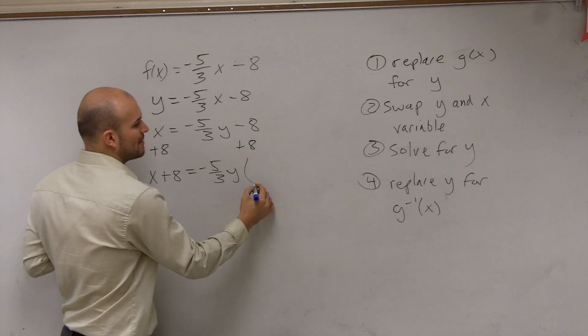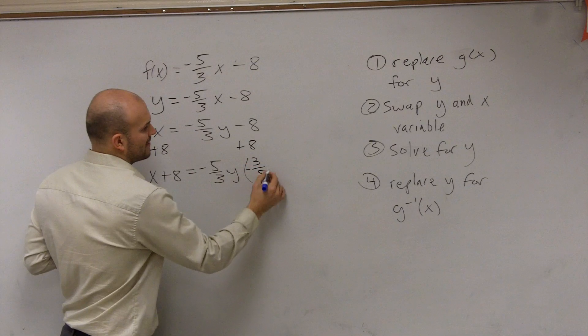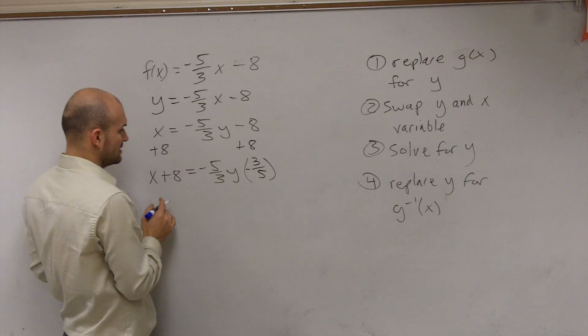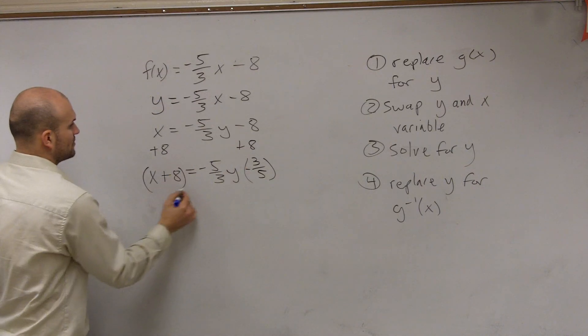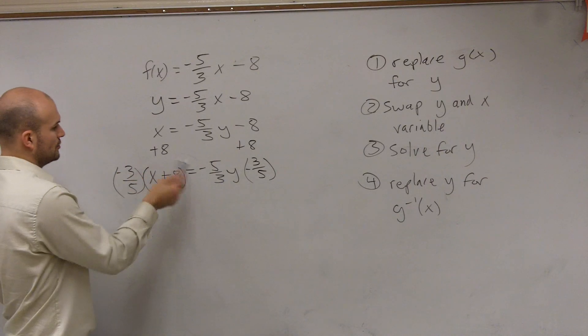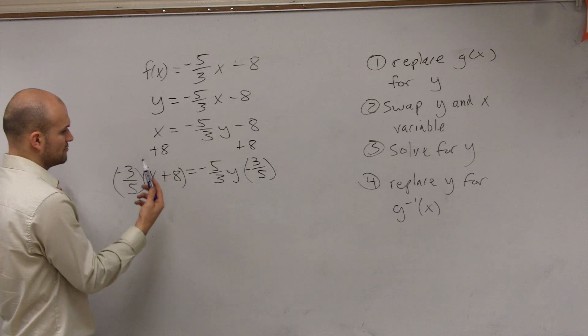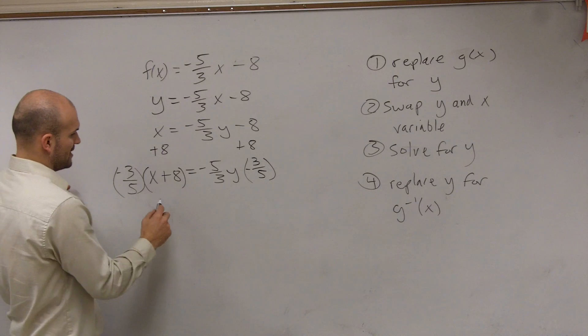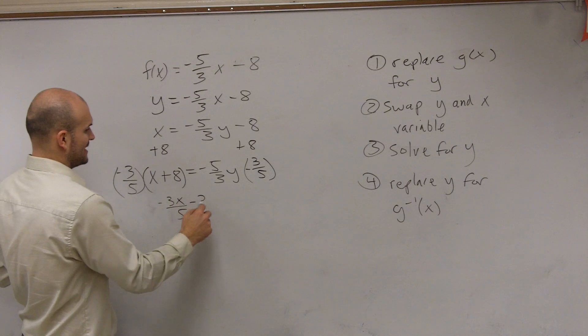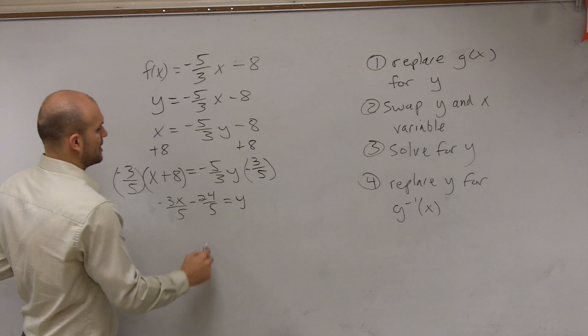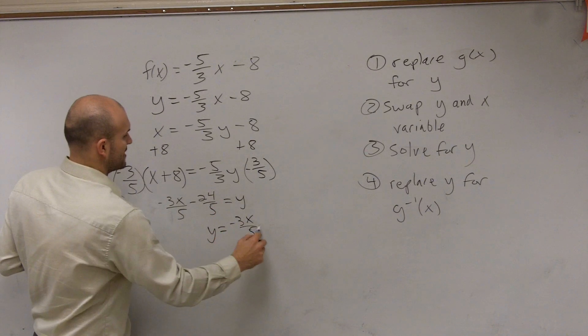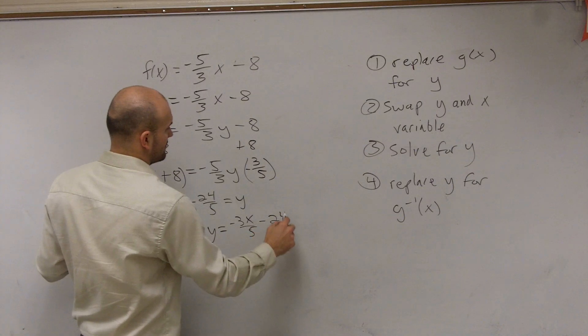You're going to want to multiply by the reciprocal. The multiplicative inverse. So you multiply that on both sides. You could distribute that. So I'd have a negative 3x over 5, and this is going to be minus 24 over 5 equals y, or y equals negative 3x over 5 minus 24 over 5.